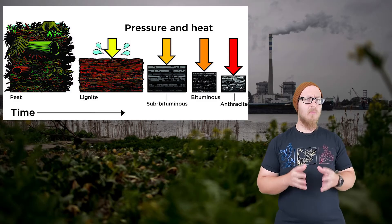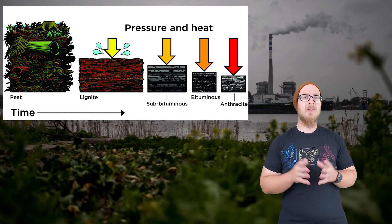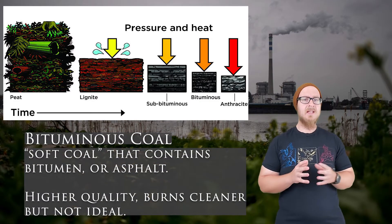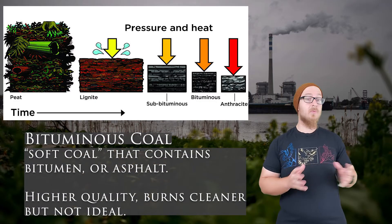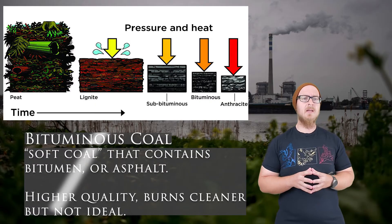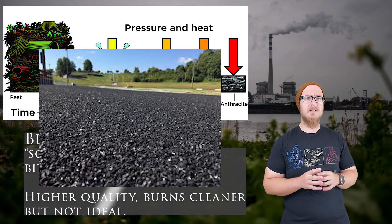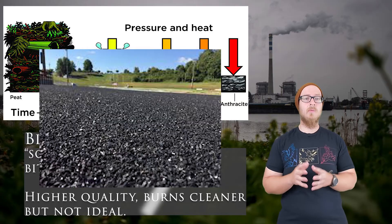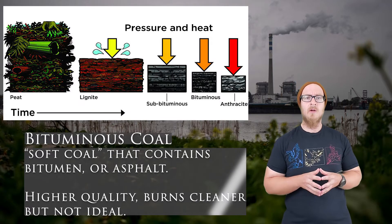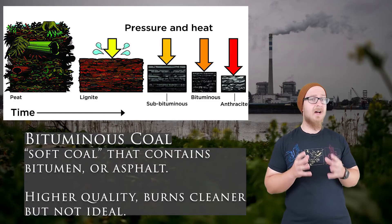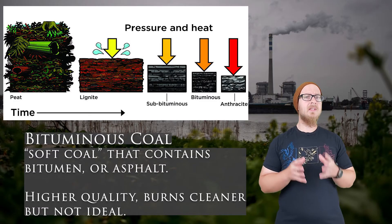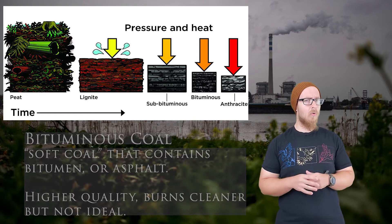As even more heat and pressure is applied, the lignite is converted into bituminous coal. It's named that way because one of the substances it contains is bitumen — another name for asphalt — the sticky substance that holds our roads together and seals our roofs. While bituminous coal is of higher quality and energy density than lignite, it's still not the ideal coal.